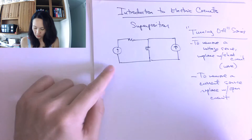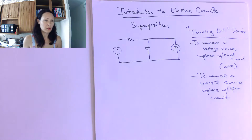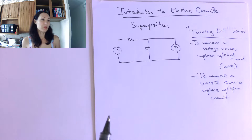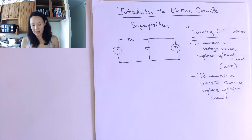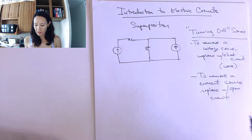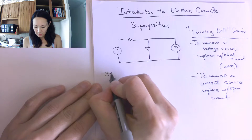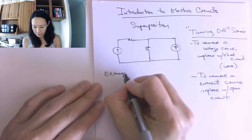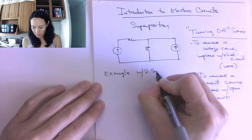In other words, we can just remove the current source. We don't want to remove both sources at once — we want to remove one at a time for this example that has two sources in it. So let me show you how this works with an example with two sources.